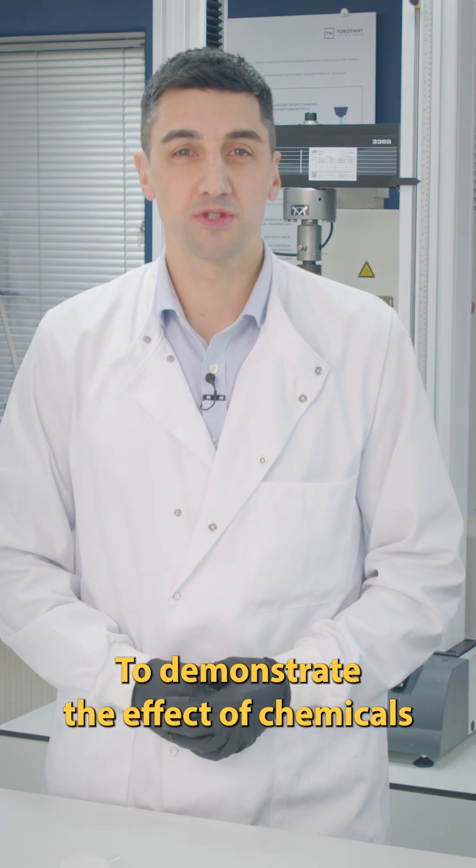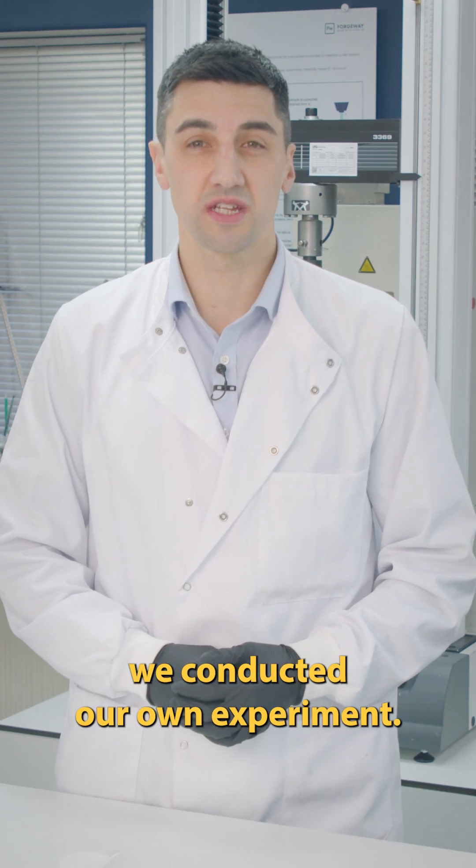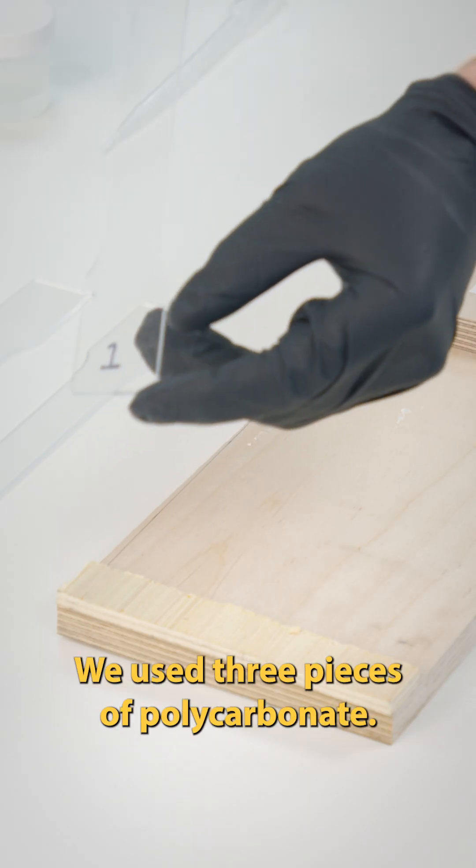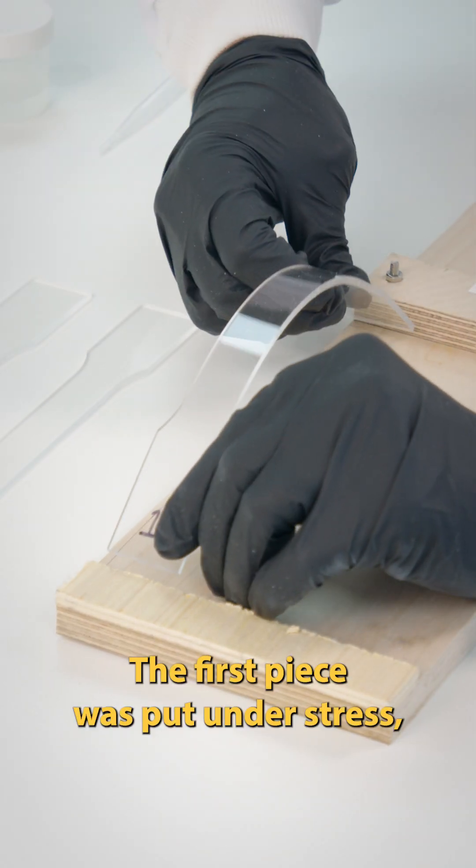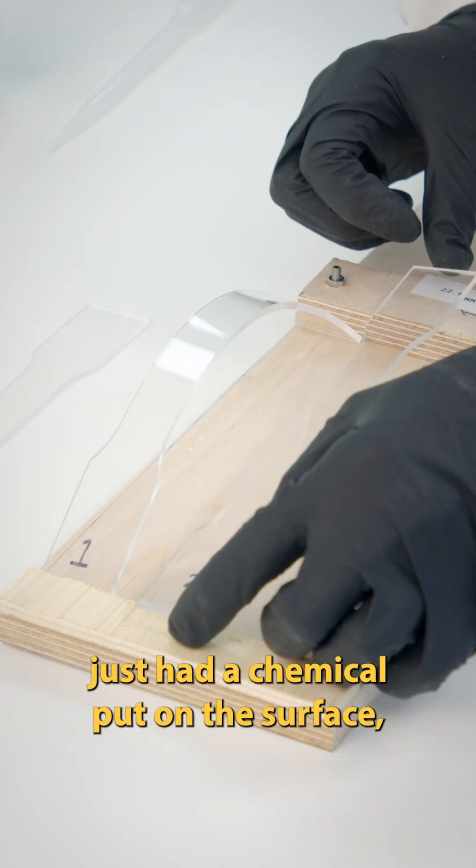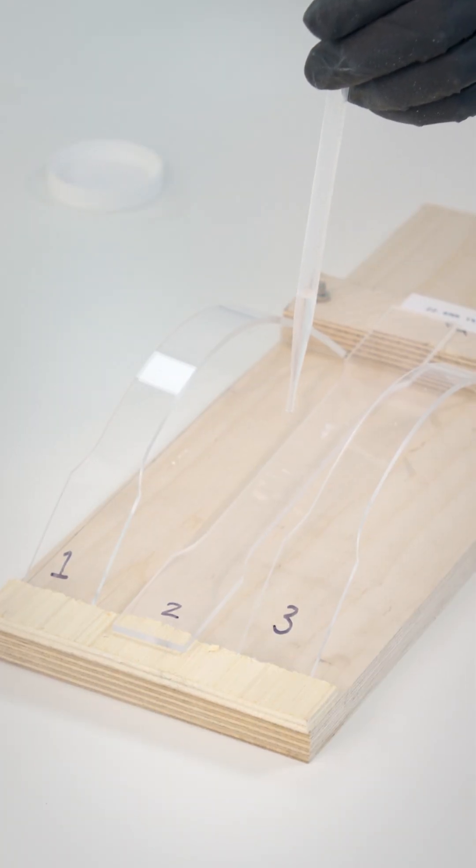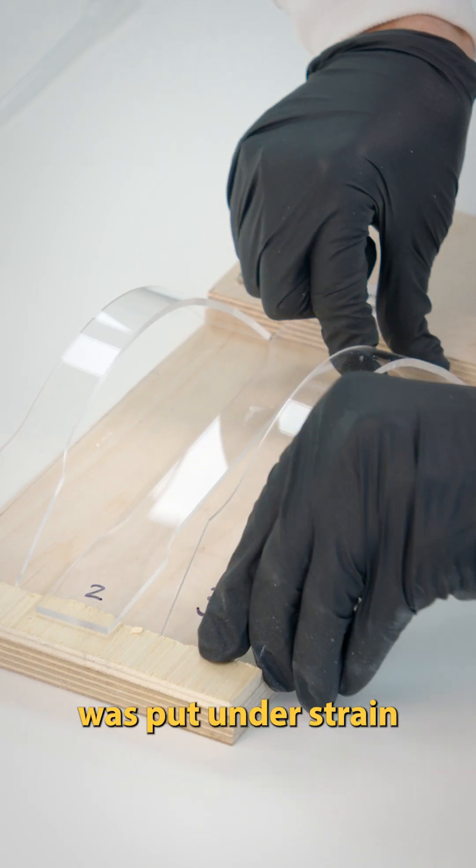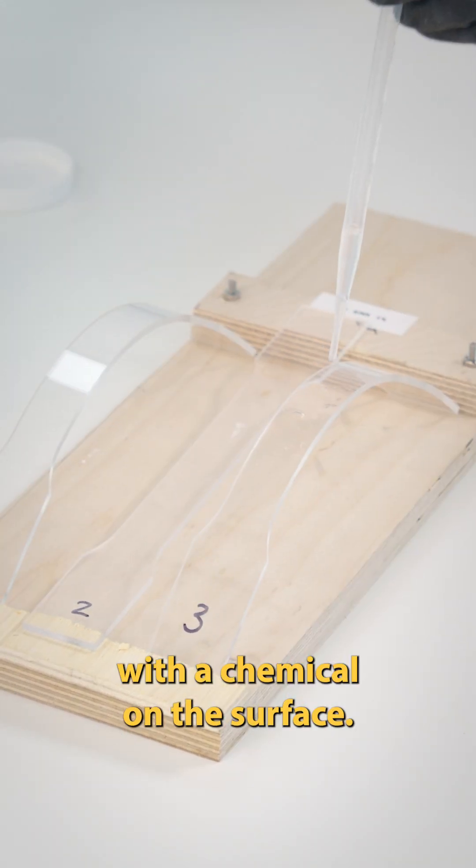To demonstrate the effect of chemicals and plastics under stress, we conducted our own experiment. We used three pieces of polycarbonate. The first piece was put under stress but with no chemicals. The second piece just had a chemical put on the surface, and the third piece was put under strain with a chemical on the surface.